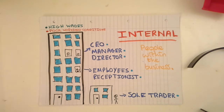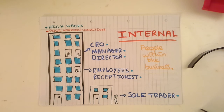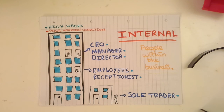First of all, we've got internal stakeholders and these are people that are directly within the business. So this could be employees, managers, the CEO, or possibly a sole trader who owns his own business. Businesses can provide good working conditions or high wages, but at the same time they could have poor working conditions, which obviously employees aren't going to be very happy about.